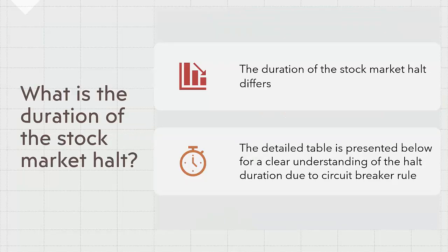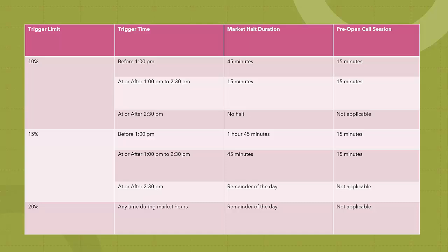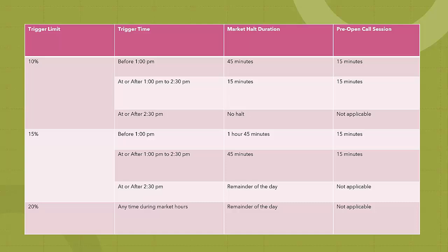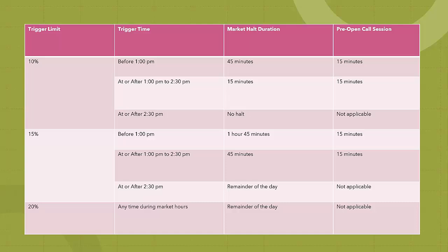Now let us look at the various percentage falls and the duration of trading halts as prescribed by SEBI. There are three categories: 10%, 15%, and 20%. If the market falls by 10% before 1 PM, the market halt duration is 45 minutes, resuming after a pre-open call session of 15 minutes. If the market falls by 10% at or after 1 PM but before 2:30 PM, the market will be halted for 15 minutes. And if the market falls by more than 10% at or after 2:30 PM, the market will not be stopped and trading will continue as normal.